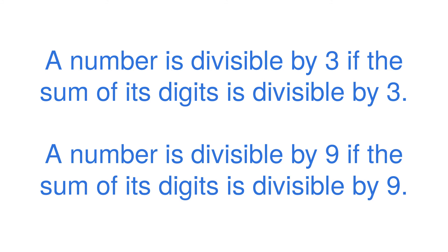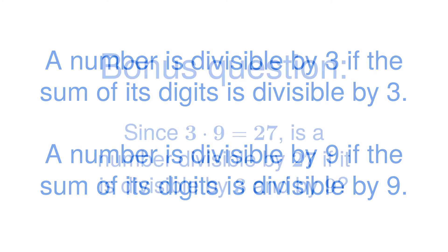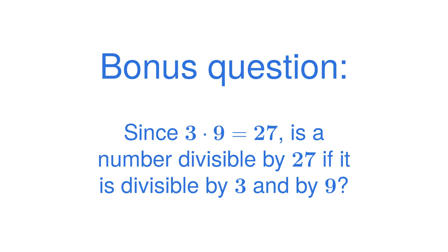With that in mind, I leave you with this question: since 3 times 9 is equal to 27, is a number divisible by 27 if it is divisible by both 3 and by 9?